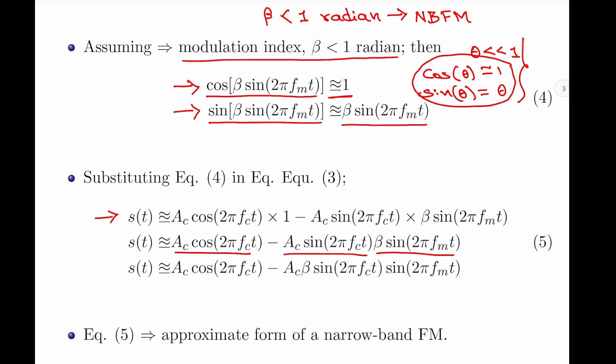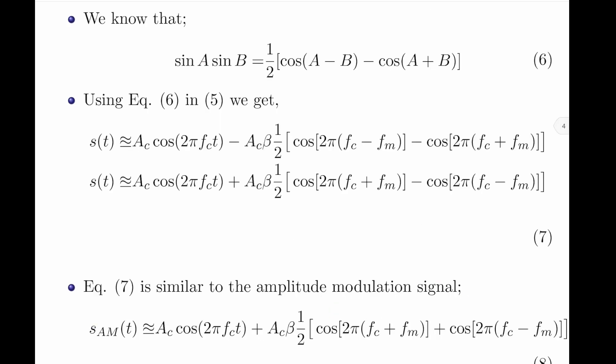In the next step I am going to group ac and β. The second term is in the form of sin(a)·sin(b). Also note that equation 5 defines the approximate form of the narrow band frequency modulation signal produced by the sinusoidal modulating signal, which is am·cos(2π·fm·t).